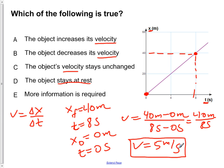So this tells us that we have a velocity of 5 meters per second. And we notice that the slope of this graph is not changing. So this is also a constant 5 meters per second.